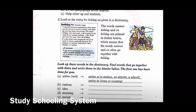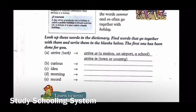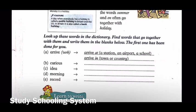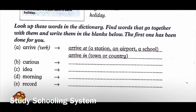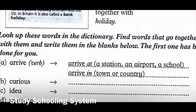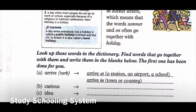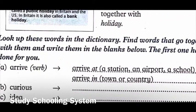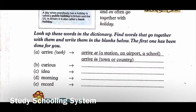So now let's go to the exercise. Look up these words in the dictionary, find words that go together with them, and write them in the blanks below. The first one has been done for you — part A, arrive, verb. They've written arrive at a station, an airport, a school; arrive in town or country. In the dictionary they found that arrive at and arrive in are common phrases, with examples in brackets.